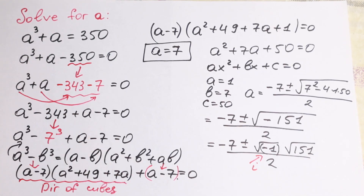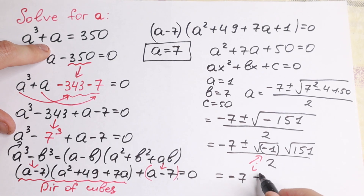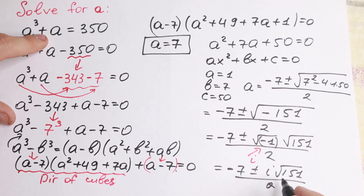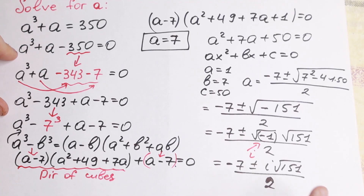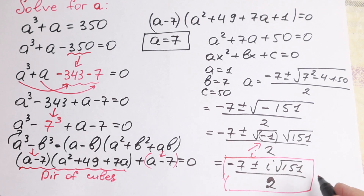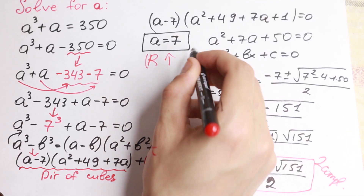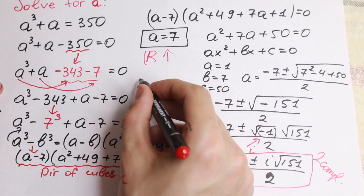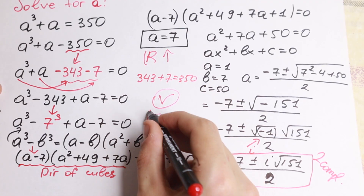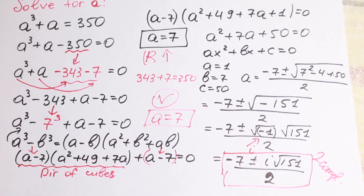Since the square root of minus 1 equals i, our final answer is two complex roots: minus 7 plus or minus i times the square root of 151, all over 2. So we have one real root and two complex roots. We can verify: 7 cubed plus 7 equals 343 plus 7 which equals 350 — so a equal to 7 checks out. If you have any questions or another method, write your suggestion in the comments. Thank you for watching, see you in the next video.